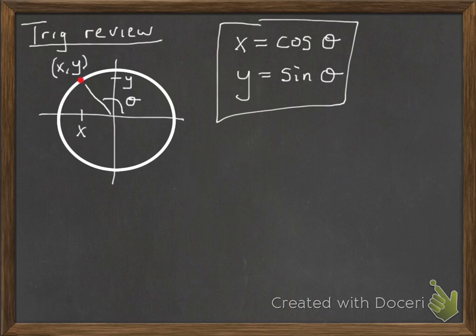Now there are some other functions that we talk about with these. There's tangent of theta, which is just sine over cosine. So if sine is y and cosine is x, tangent is just the y over the x.